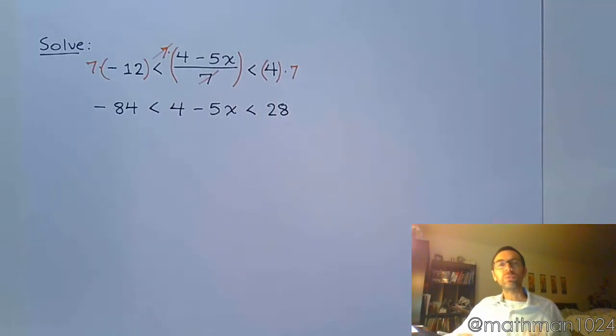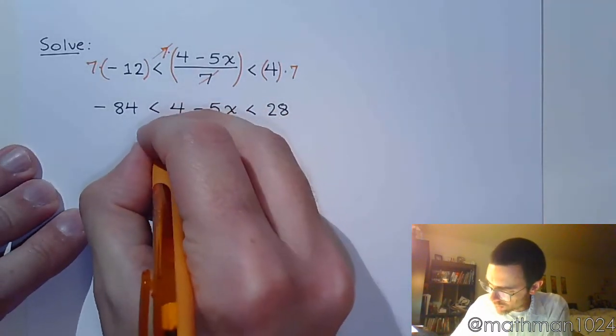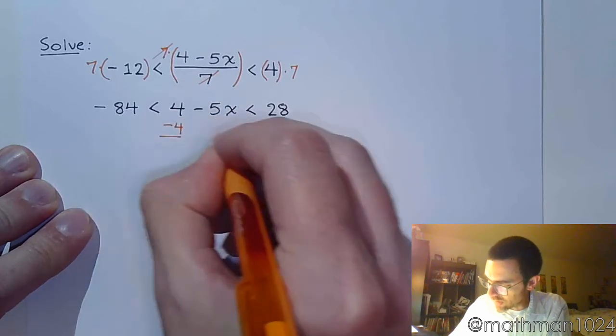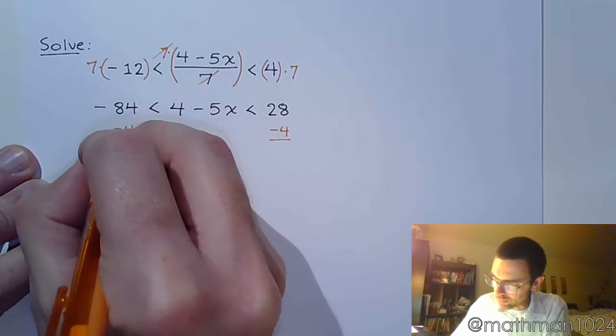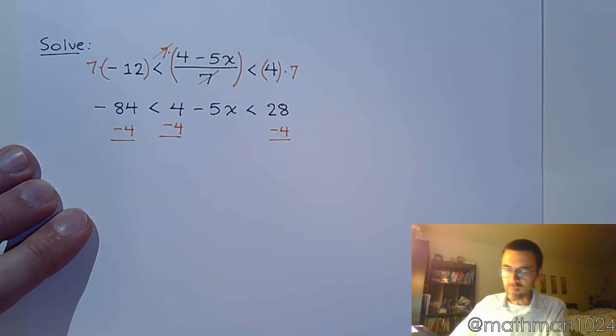All right, well, now it's just like the last problem that we did. We've got to go through the steps of getting x by itself, starting with moving any constants that are not directly connected to the variable. So, I need to subtract 4 on both sides first. So, minus 4, minus 4, everywhere.